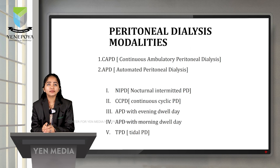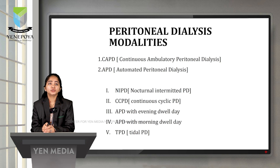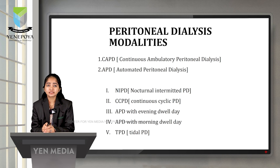There are two main modalities of peritoneal dialysis: continuous ambulatory peritoneal dialysis (CAPD) and automated peritoneal dialysis (APD). Under automated peritoneal dialysis, the subtypes include nocturnal intermittent peritoneal dialysis, continuous cyclic peritoneal dialysis, APD with evening dual day, APD with morning dual day, and tidal PD.